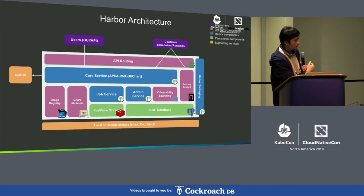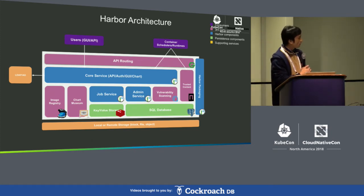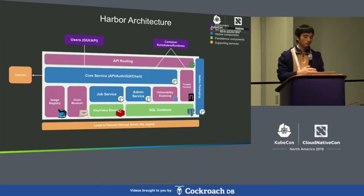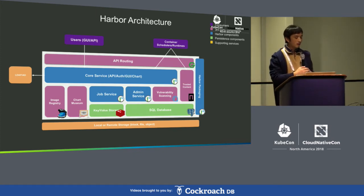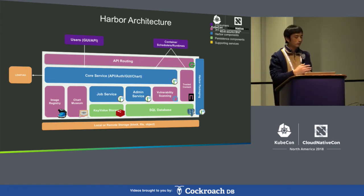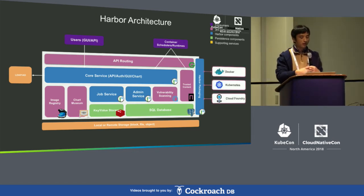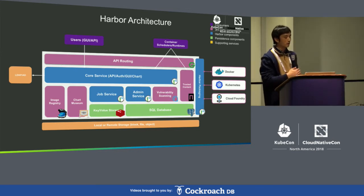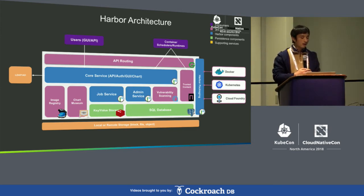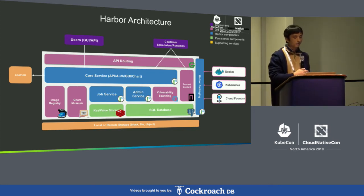There is also Clair, a third-party component supporting vulnerability scanning, and Notary for content trust. Two data stores: Redis for cache and key-value metadata, and PostgreSQL to store Harbor metadata. The right side shows packaging components — several ways to deploy Harbor to different target environments. The lowest layer is the storage layer, where you can use local storage or remote storage like S3.